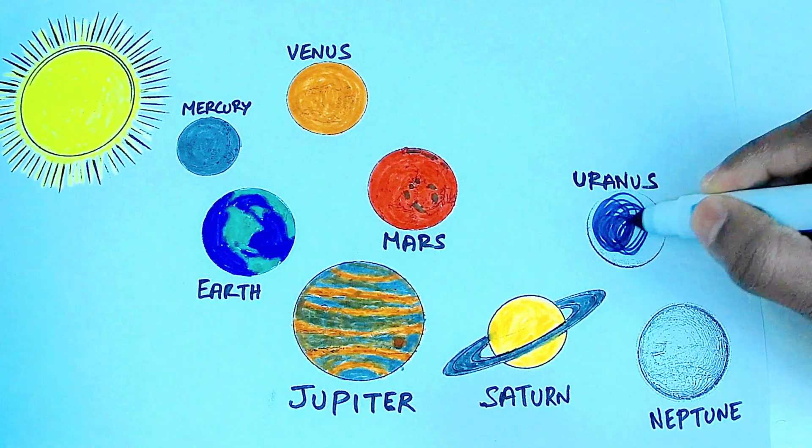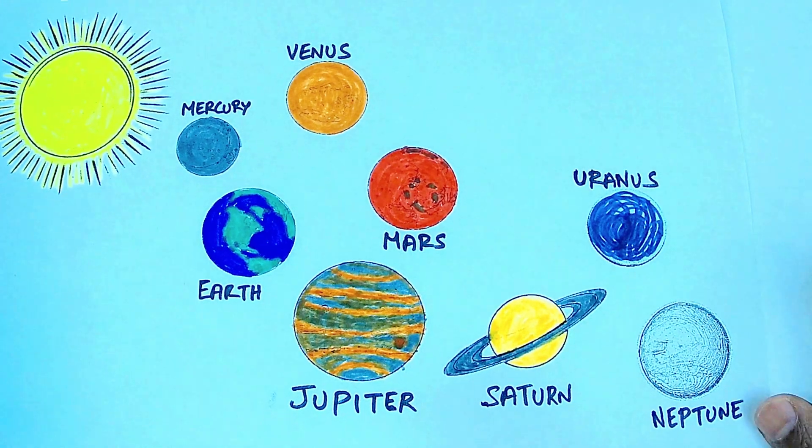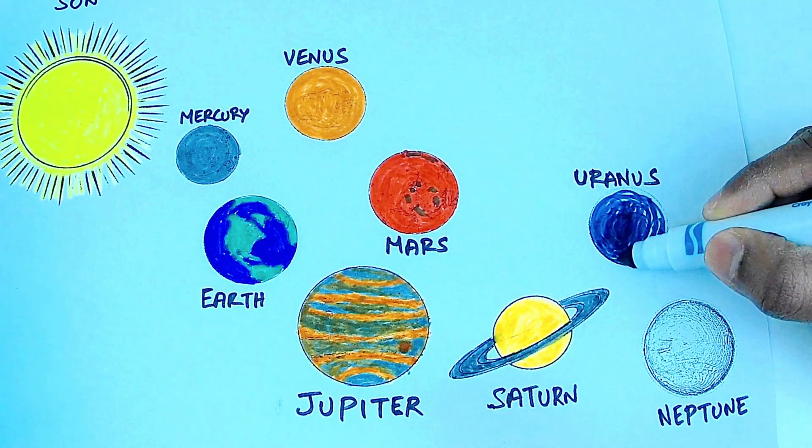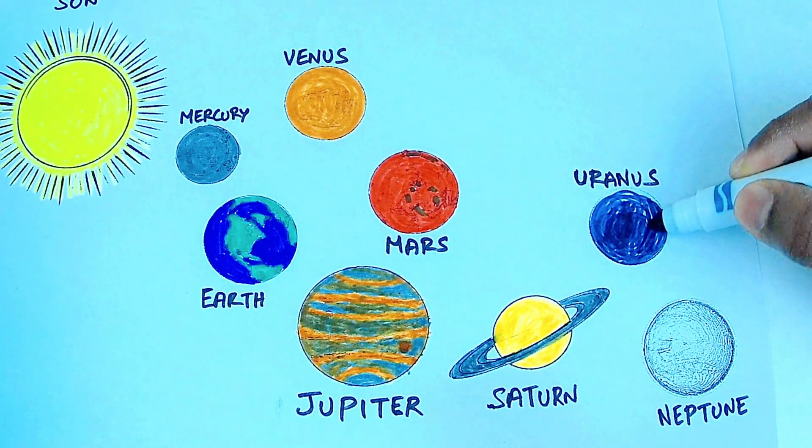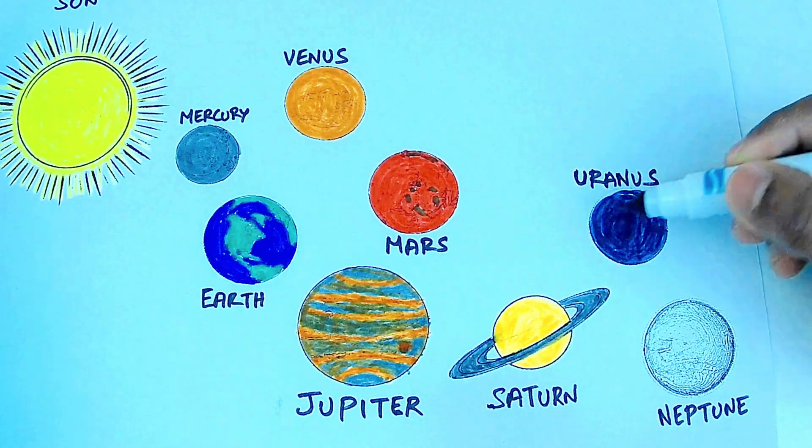Uranus. Uranus is the seventh planet from the Sun. It has the coldest temperature of all the planets. It is an ice giant. It is the only planet that spins on its side.